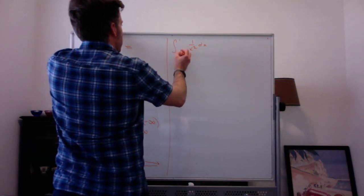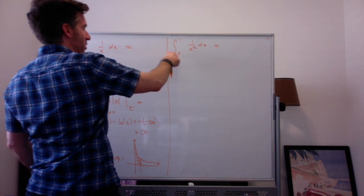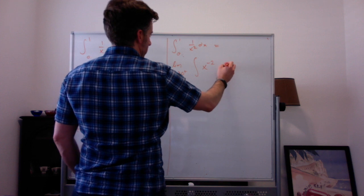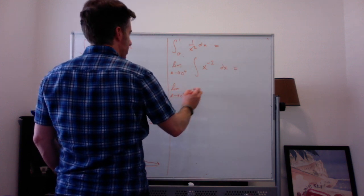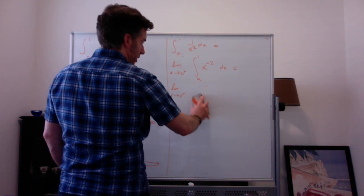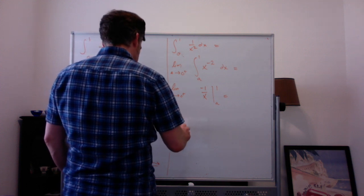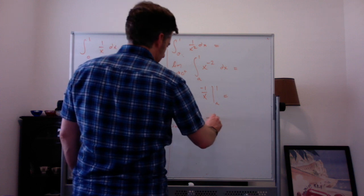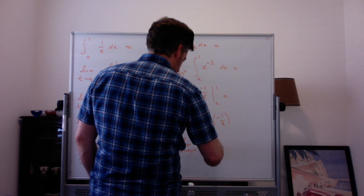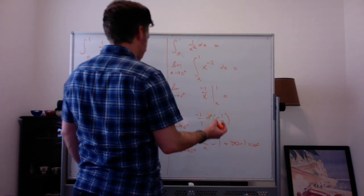Recall that the integral from 1 to infinity of 1 over x squared converged to 1. Now we'll do the same kind of setup here. This would be the limit as A goes to 0 from the right — still between 0 and 1 — of the integral of 1 over x squared, which is x to the minus 2. Integrating gives x to the negative 1 over negative 1, which is just negative 1 over x, evaluated from A to 1. Plugging in the bounds: the limit as A goes to 0 from the right of negative 1 over 1 minus negative 1 over A, which simplifies to the limit of negative 1 plus 1 over A. As A goes to 0 from the right, 1 over A blows up to infinity, so this goes to infinity minus 1, which is infinity.